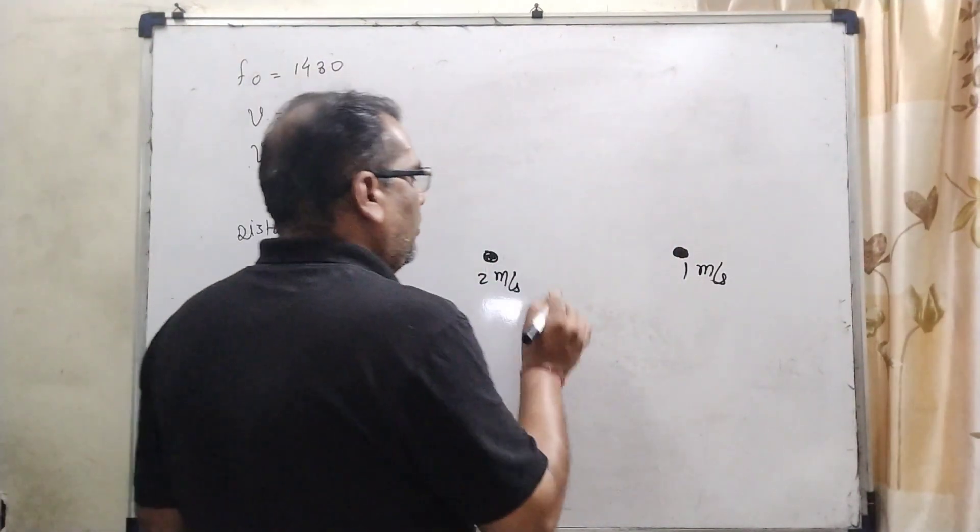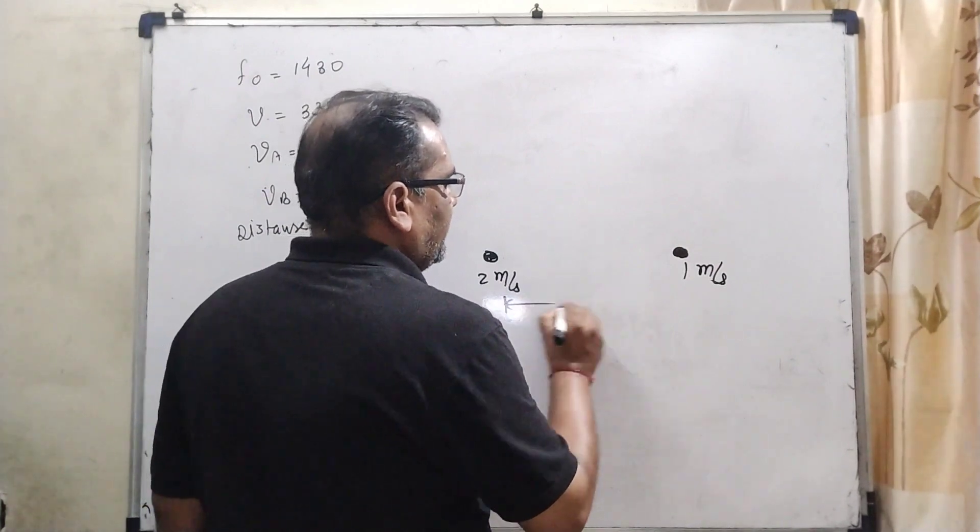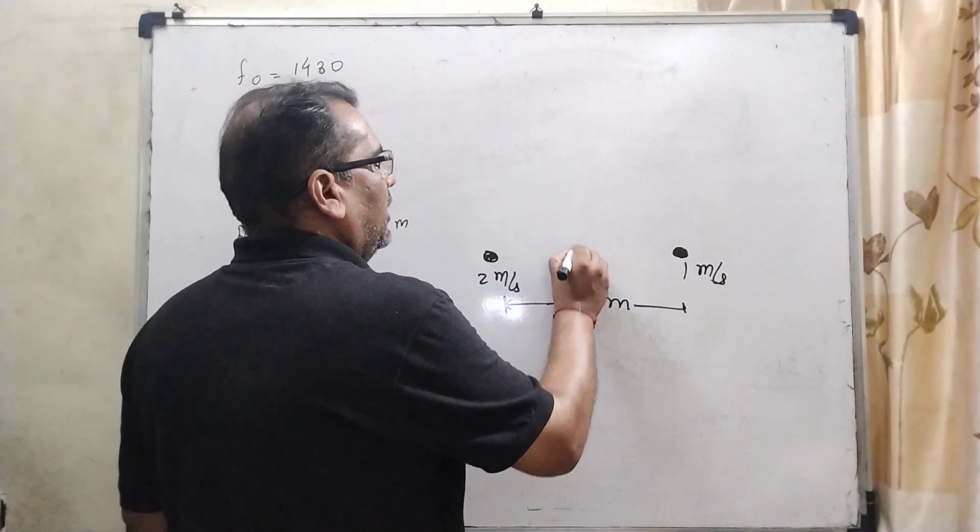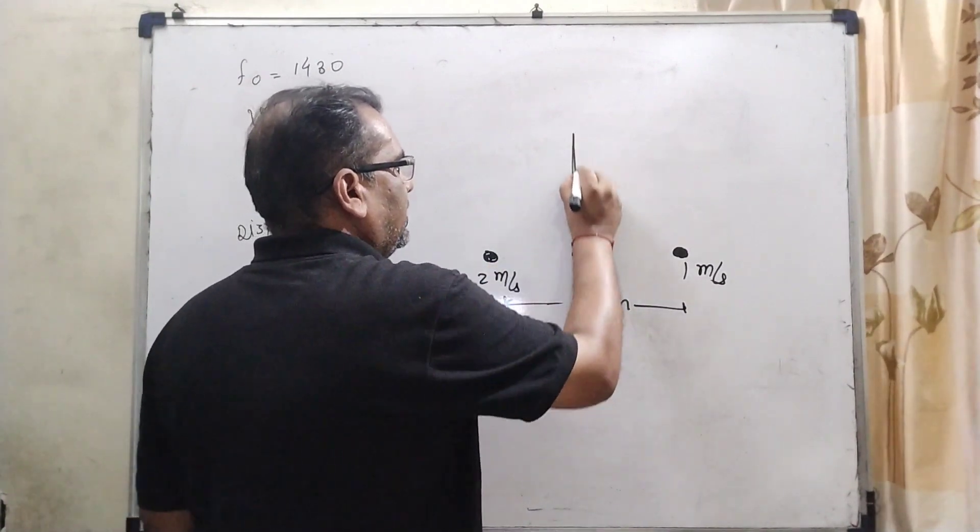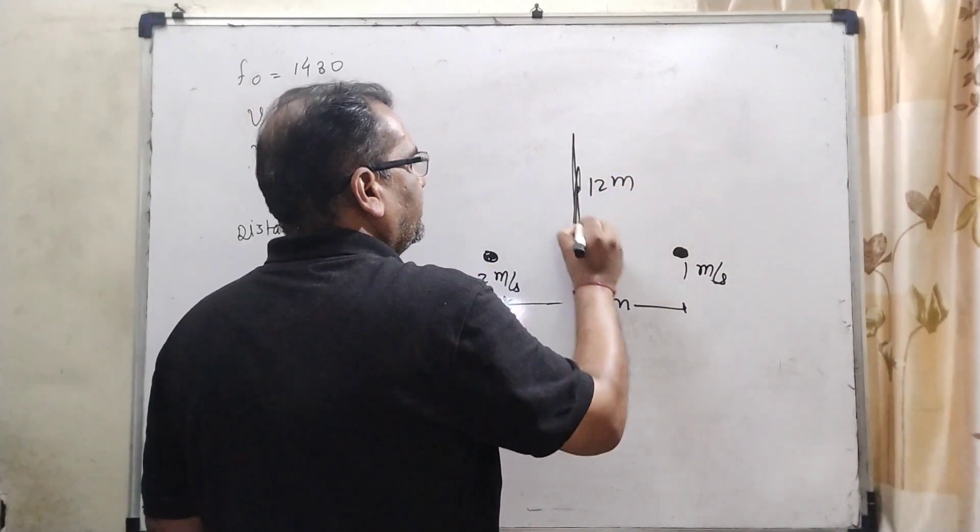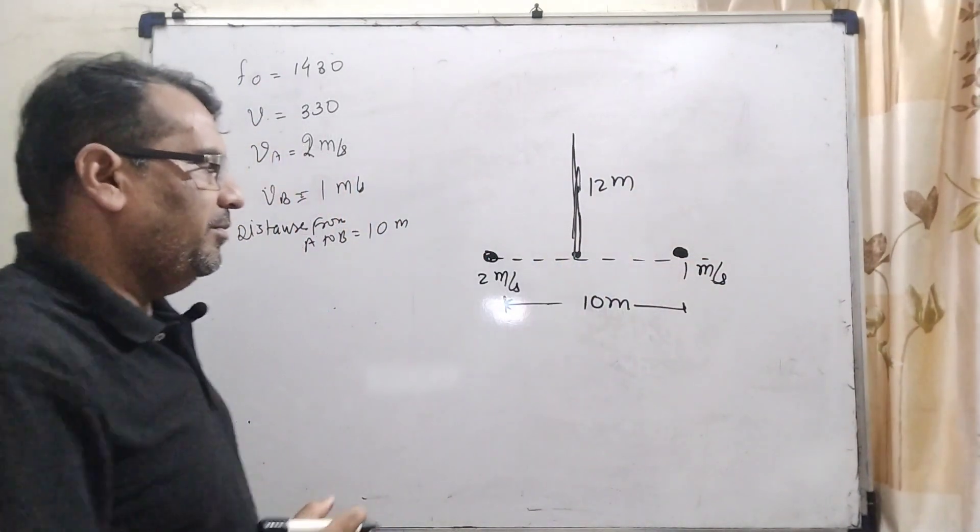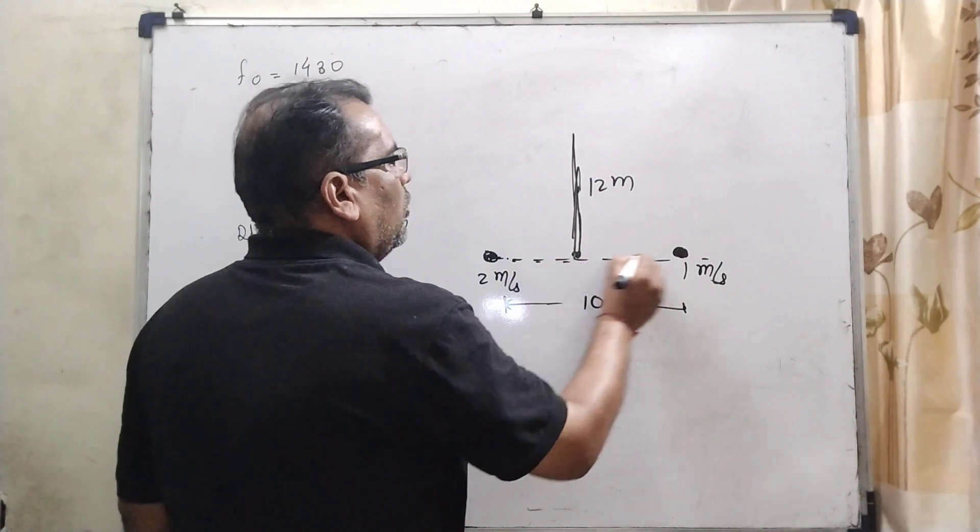At the distance, at an instant, the separation is 10 meter. At the moment, in between, a third man, which has height 12 meter, is standing such that all three men are collinear.